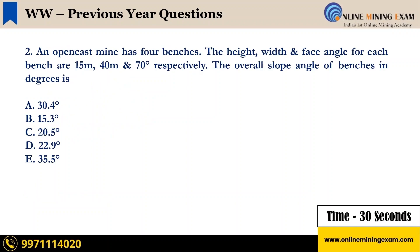Next question: An open cast mine has four benches. The height, width and face angle for each bench are 15 meters, 40 meters and 70 degrees respectively. The overall slope angle of benches in degrees is: A. 30.4 degrees. B. 15.3 degrees. C. 20.5 degrees. D. 22.9 degrees. E. 35.5 degrees. Your time starts now.